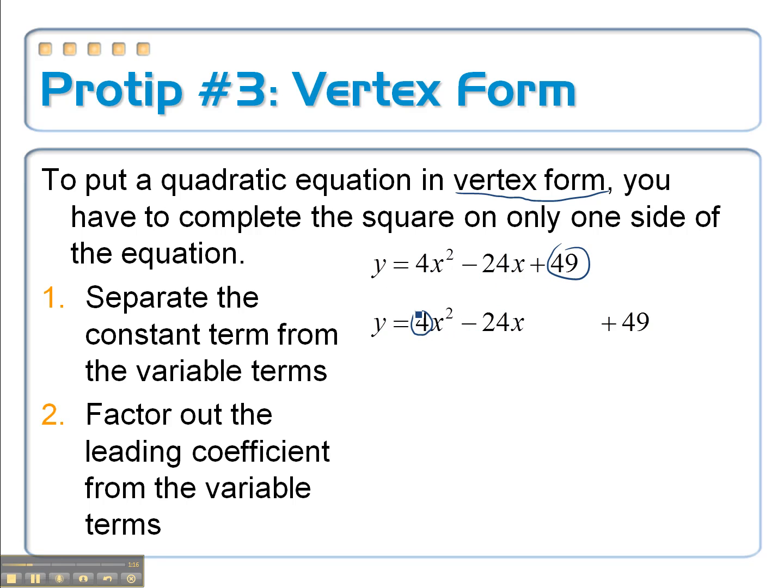Now, just like before, we can't have this 4 out front. But instead of dividing everything by 4, what you're going to do is just factor it out of just these two terms. So it'll look like this: 4 times x squared minus 6x, after I factor it out of the 24, plus blank.